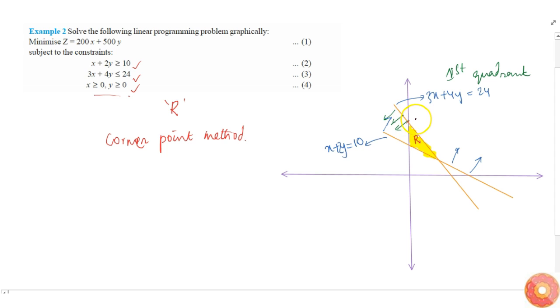This is (6,0), this is (0,6), this is (0,5). This point is given as the intersection of 3x plus 4y equal to 24 and x plus 2y equal to 10, so that means 2x plus 4y equal to 20, x equal to 4 and y equal to 3. This point is (4,3).